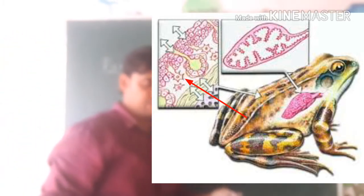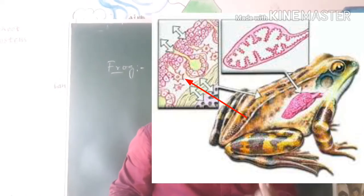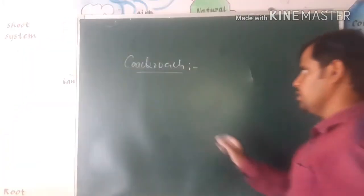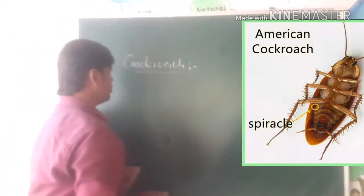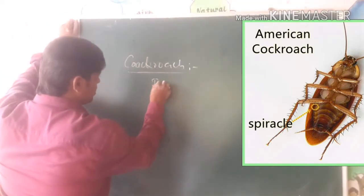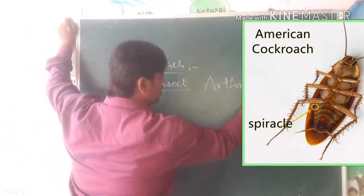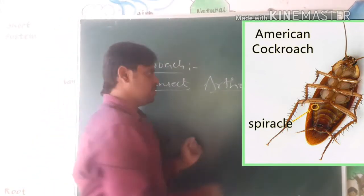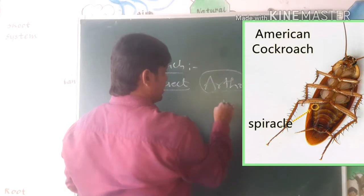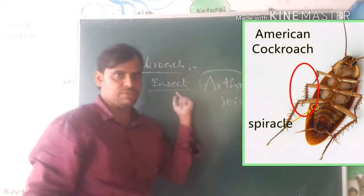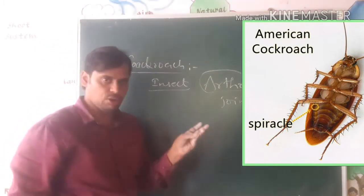We already discussed that the frog is able to respire through the skin, through the gills, and through the lungs. Frog is completed. Next, we come to cockroach. Cockroach is an insect and it belongs to the phylum Arthropoda. Arthropoda means jointed legs — organisms with jointed legs and without a backbone are called insects.